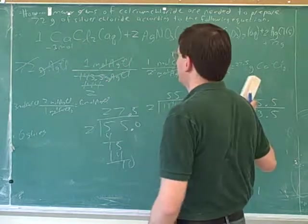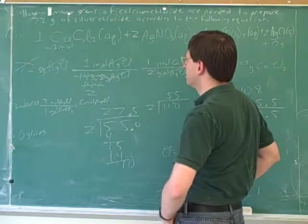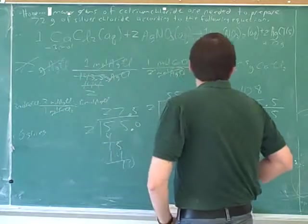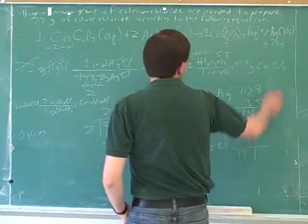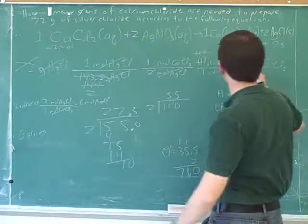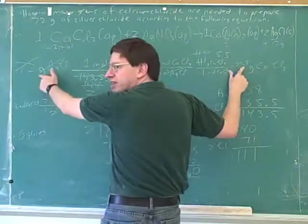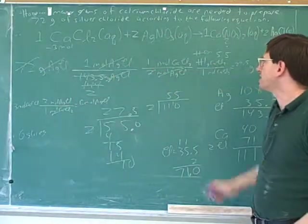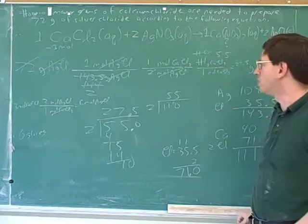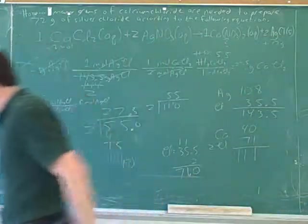We're going from silver chloride to calcium chloride — the opposite direction. We're making 72 grams of silver chloride, so we'd expect to use half as many moles of calcium chloride. But did we use half as many grams? No — 27 is not half of 72. That just reinforces the key idea: the coefficients refer to moles, not grams. That's why we had to convert into moles before we could use the coefficients.